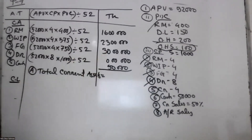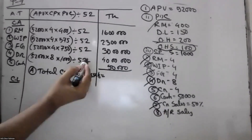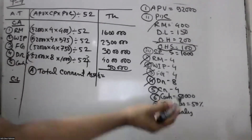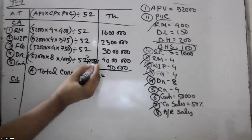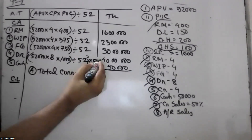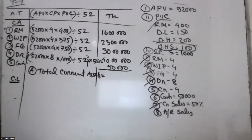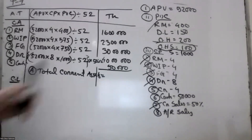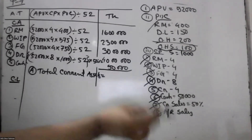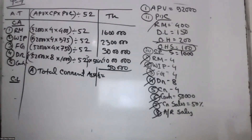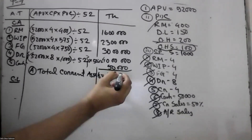How much work can be done for today? Credit sales is 50%. 30,000. 9,000. 1,000, 9,000.